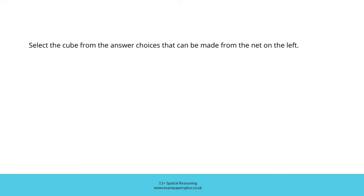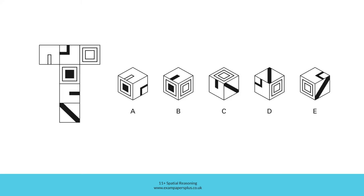Select the cube from the answer choices that can be made from the net on the left. In order to answer this question, we're going to consider this net — the net for a cube. The cube which could be created from this net is represented by one of these five answer options. We're going to take a closer look at the net and try to visualise folding it to create the cube, which should help us identify which one of the five answer options is correct.